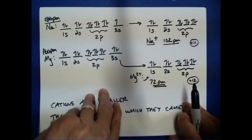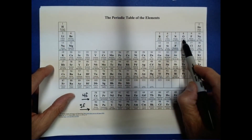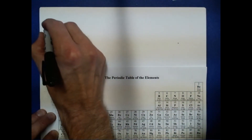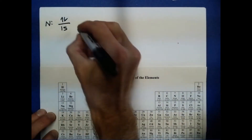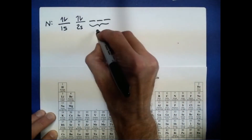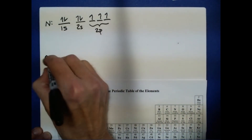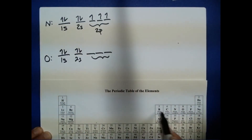Now let's look at what happens when atoms form anions. We'll compare nitrogen going to nitride and oxygen going to oxide. The electronic configuration of nitrogen is 1s², 2s², 2p³, and for oxygen it's very similar: 1s², 2s², 2p⁴.